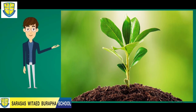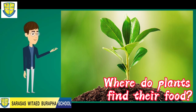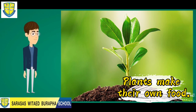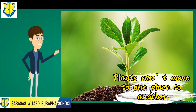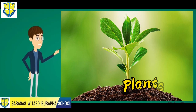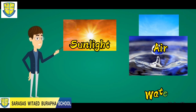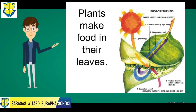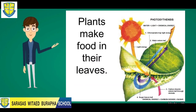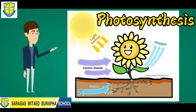Let's start first with plants. Where do plants find their food? Plants make their own food. Unlike other living things, plants cannot move from one place to another. Plants use sunlight, air, and water to make their own food. Plants make their food in their leaves, and this process is what we call photosynthesis.